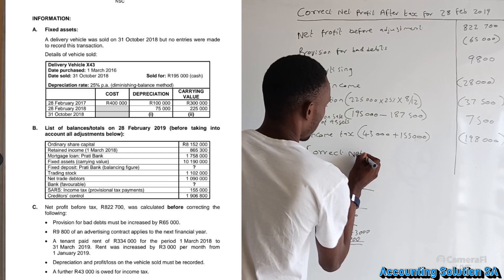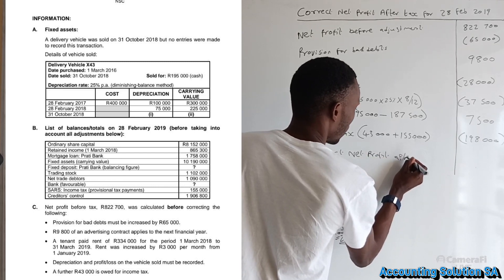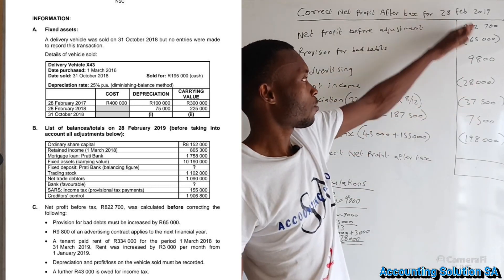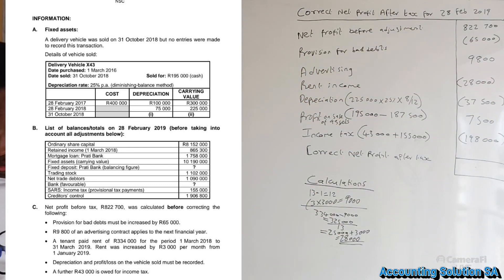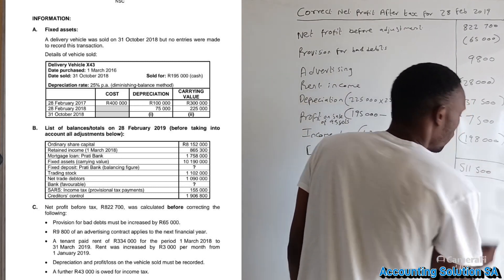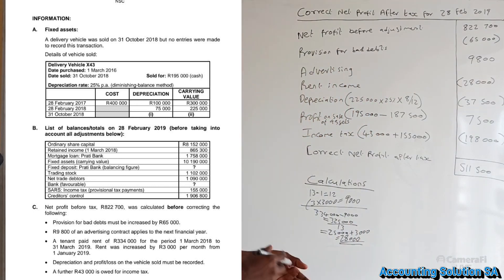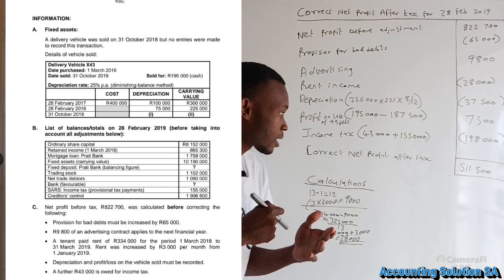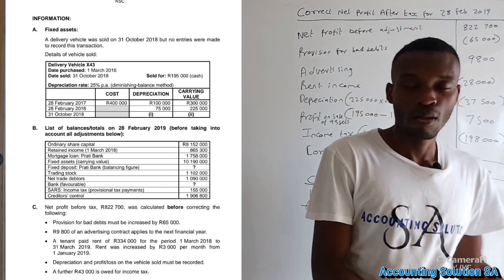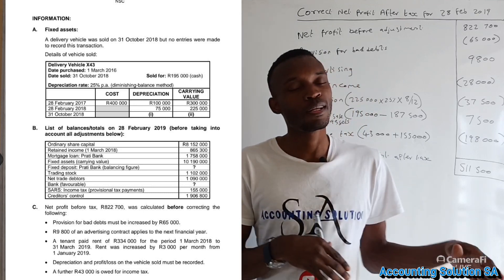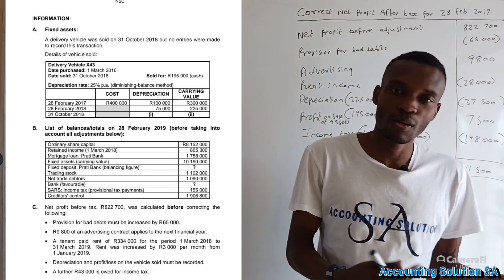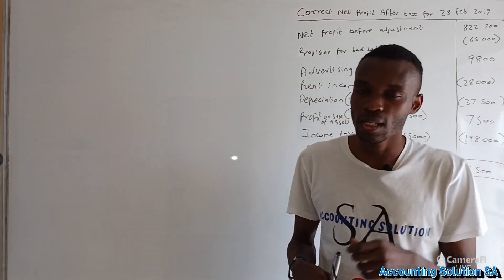Adding all positive items and subtracting all bracketed items gives us the correct net profit after tax of 511,500. I hope you learned something and enjoyed this video. Please go to the playlist and check other chapters and related questions. Thank you for watching — please subscribe, like, and share with friends. See you on the next one!